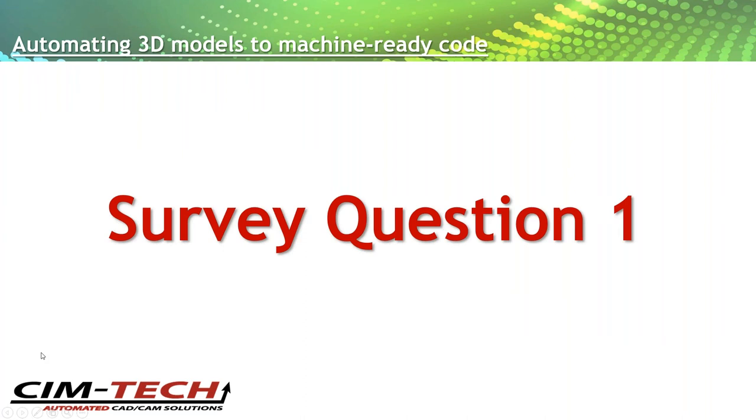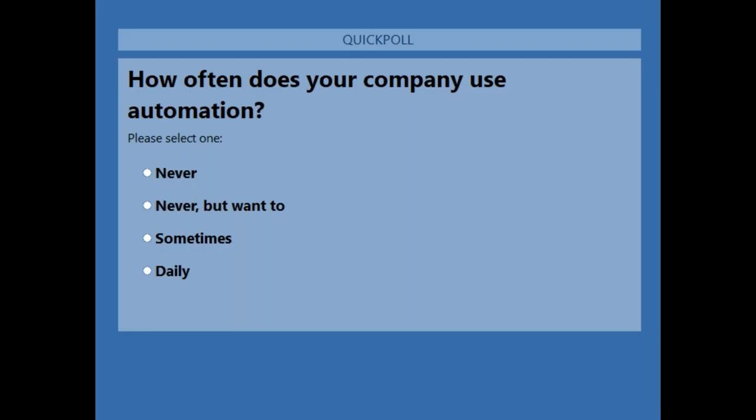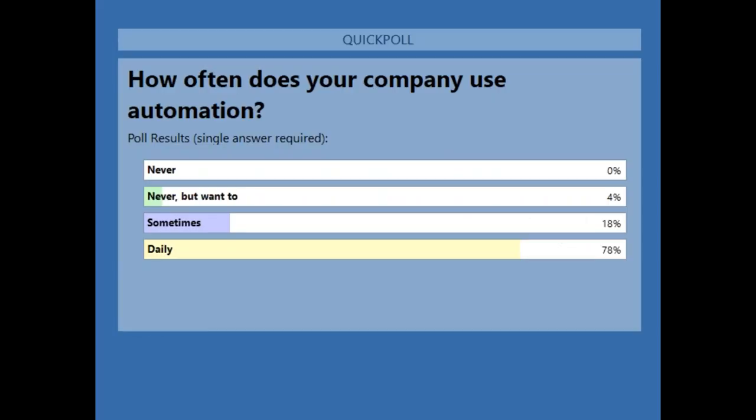Before we get into the meat and potatoes, we have our first survey question: How often does your company use automation — never, never but want to, sometimes, or daily? Looking at the results, nobody said never, which is definitely a good thing. A lot of you said daily. For those who said sometimes or never but want to, we'll show you a few reasons why you may want to automate.